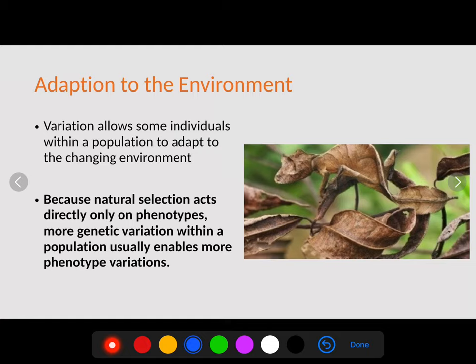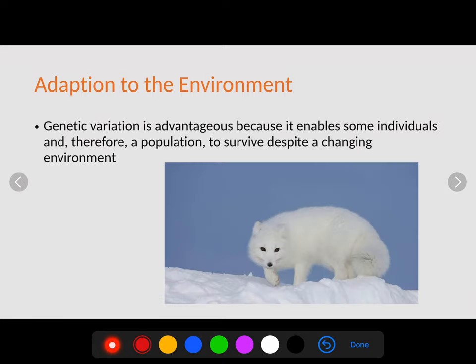Variation allows some individuals within a population to adapt to changing environments. For example, this gecko in a tree — if it lived in a location where the trees were always green, it would not be able to blend in with brown environments. So it's important that there is variation within the population, maybe a leaf gecko that is both brown and green. Because natural selection acts directly on phenotypes, more genetic variation usually enables more phenotypic variation.